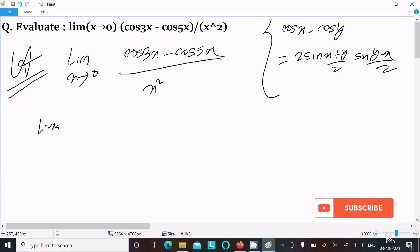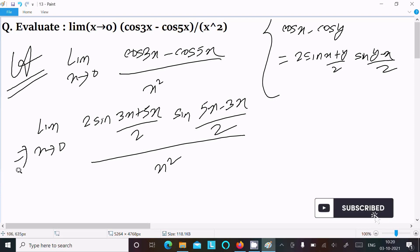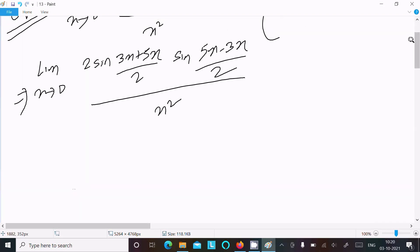Okay, so this is limit x tends to 0, 2 sin (3x plus 5x)/2 into sin (5x minus 3x) divided by 2, here x squared. After that, this here limit x tends to 0, 5 plus 3...